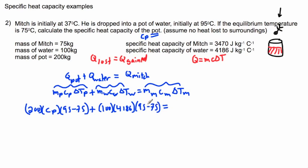Now I have the mass of Mitch which is 75 kilograms, and specific heat capacity of Mitch which is 3470. The change in temperature of Mitch goes from 37 to 75, so to make it positive I have to put the 75 first: 75 minus 37. And away I go.